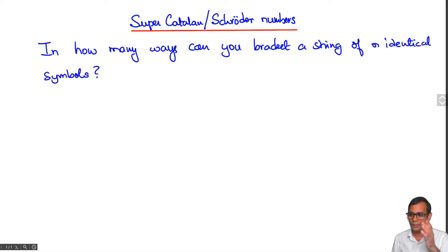You probably need some explanation so let me explain first with an example. Here I have the symbol x written five times and I can start bracketing these symbols. The brackets must be matched and here's an example of a bracketing.